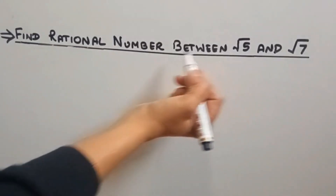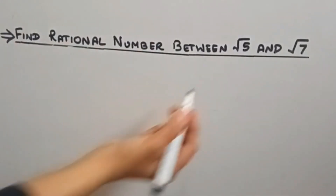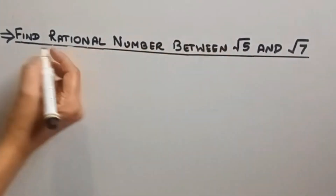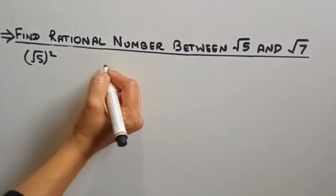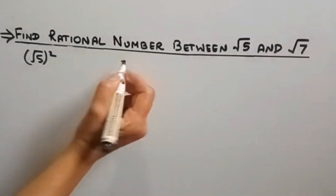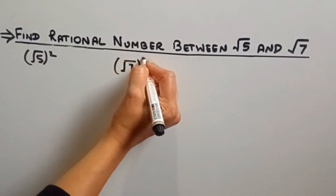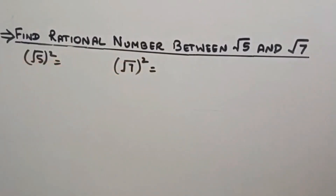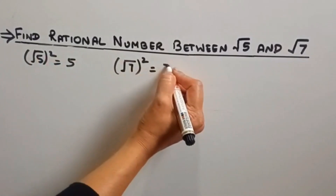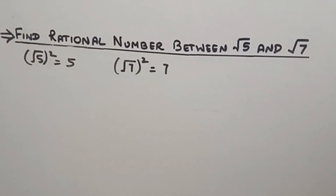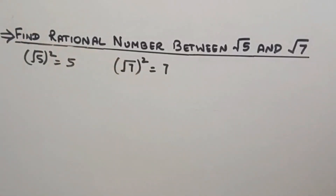Our first problem is we have to find a rational number between root 5 and root 7. First of all, we will take the square of root 5 and the square of root 7. So, root 5 squared is 5 and root 7 squared is 7.